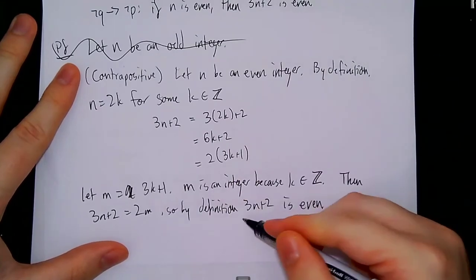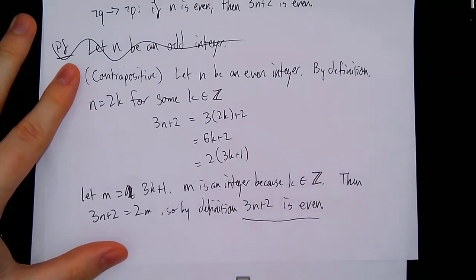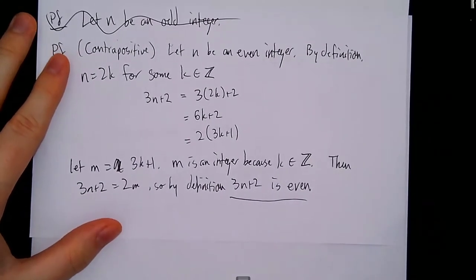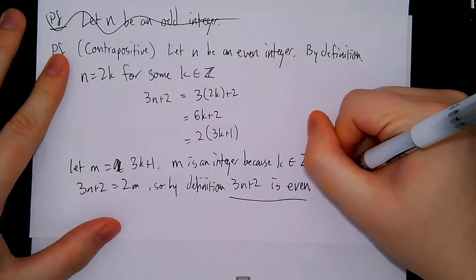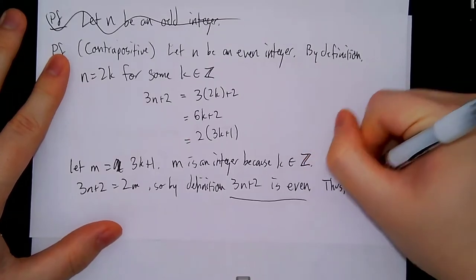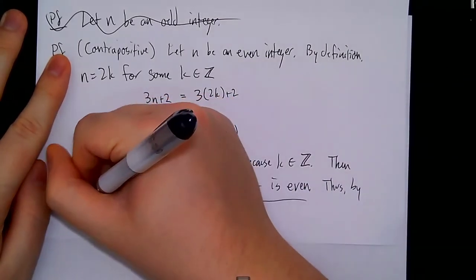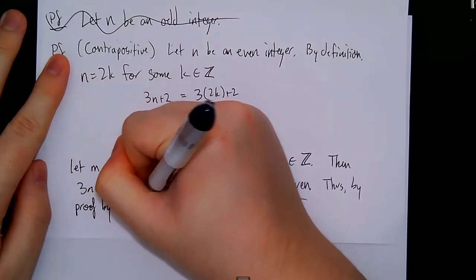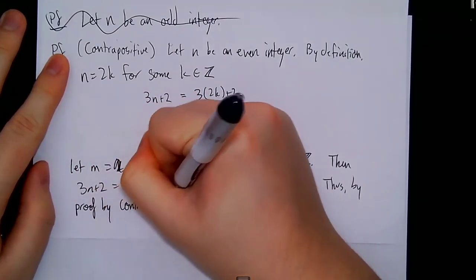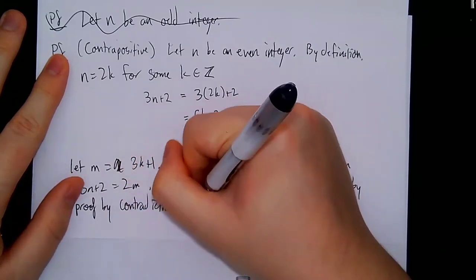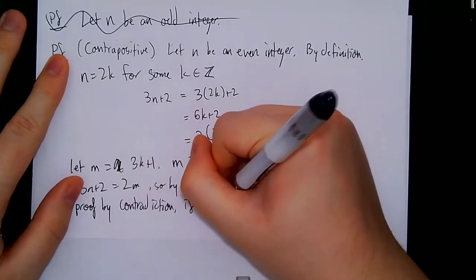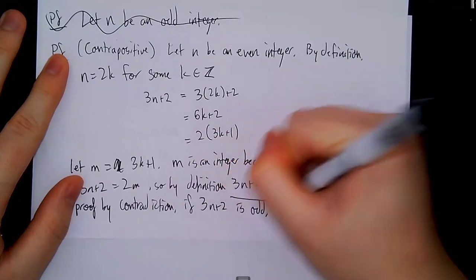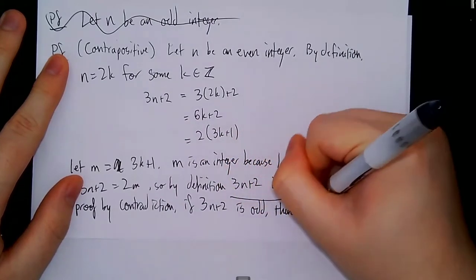So right here we have reached not-p. We can finish this off by restating the actual theorem. Thus, by proof by contraposition, if 3n plus 2 is odd, then n is odd.